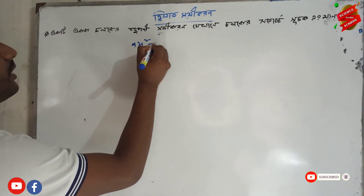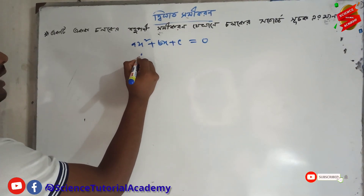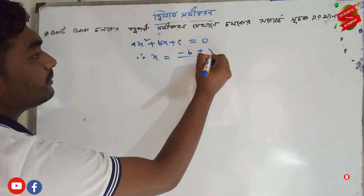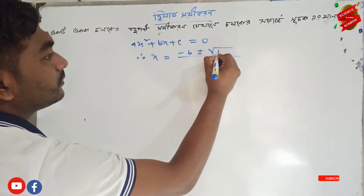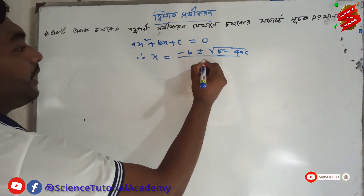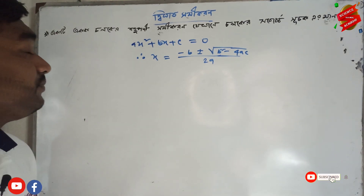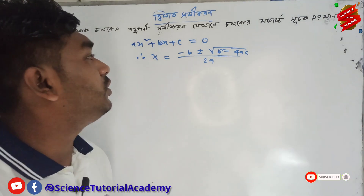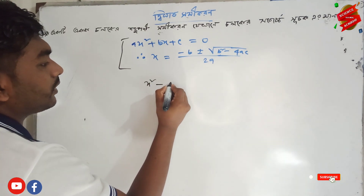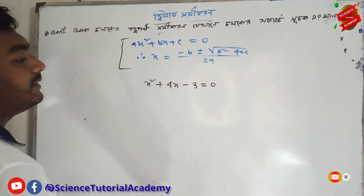ax squared plus bx plus c equal to 0. So we have to explain that x equals minus b plus or minus root over b squared minus 4ac by 2a. We have to explain that ax squared plus bx plus c equal to 0, and x squared minus 4x, x squared plus 4x minus 3 equal to 0.